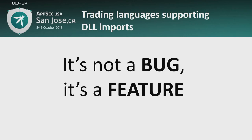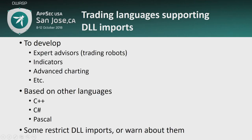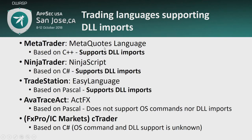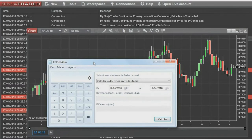Now let's move on to another interesting topic. This is not a bug — seriously, this is a feature, and it's by design. Trading programming languages support DLL imports. They allow you to create your own trading robots, indicators for advanced charting, and other things. These languages derive from C++, C#, Pascal. Some applications restrict DLL imports, some others don't. The risk is: if you download a malicious chart — which is a basic block of code — that chart could contain malicious code. If traders are not tech-savvy, they have no idea what a DLL is or the risks involved.